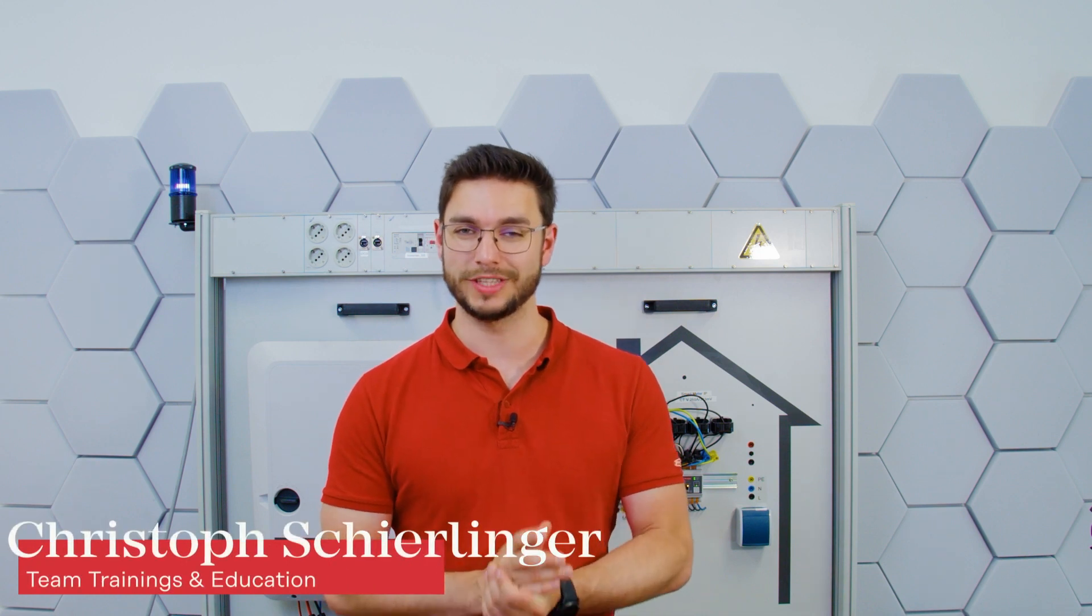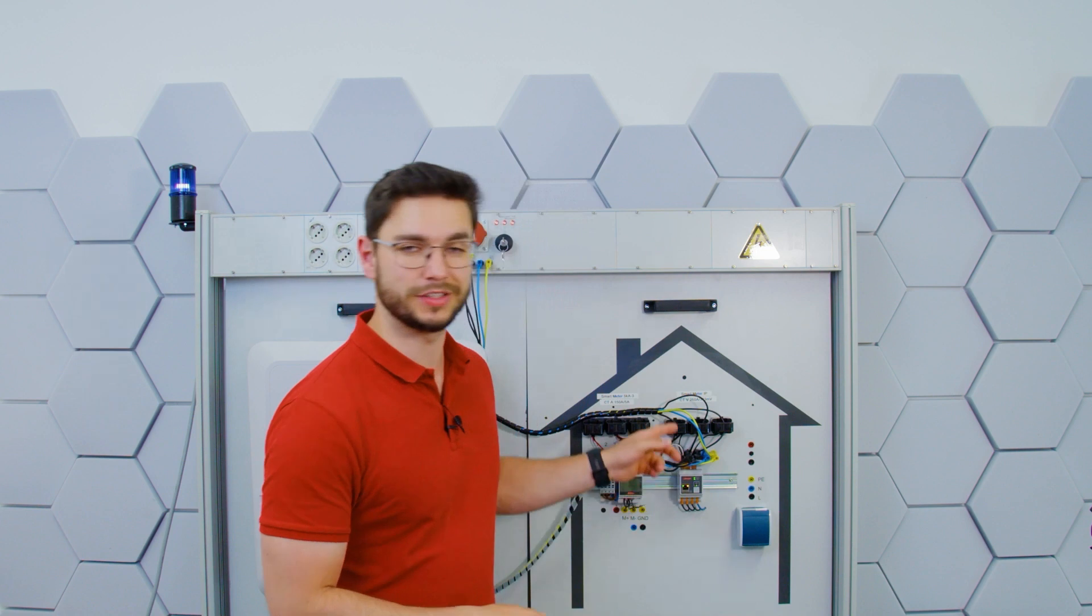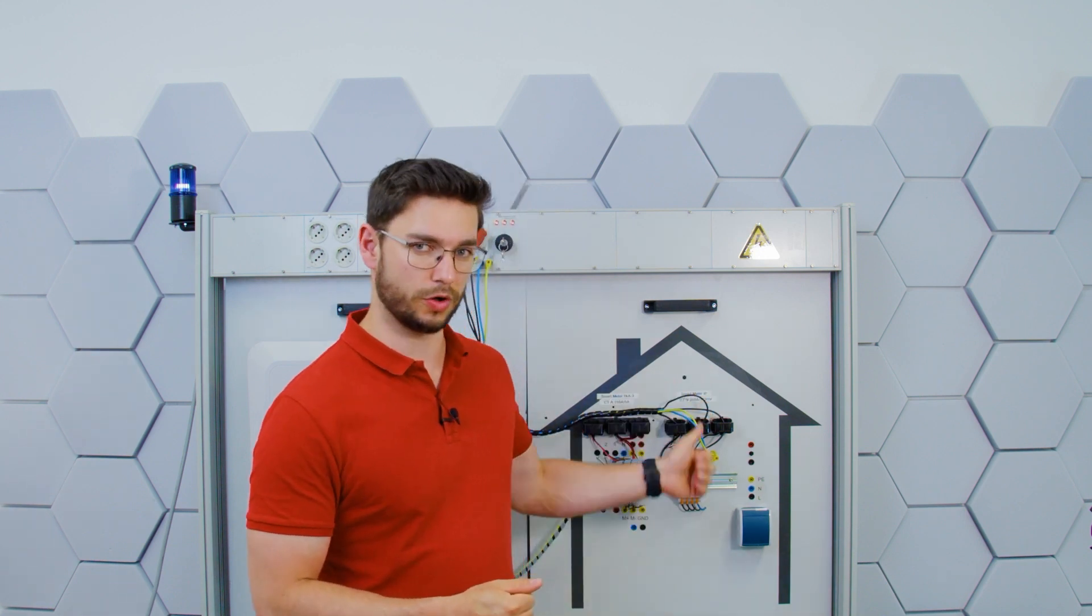Hello and welcome to yet another Fronius how-to video on the smart meter IP. Today we want to talk about how to change the Modbus address that is standard set to 1, in case you ever want to use more than one smart meter in a system as secondary smart meters.